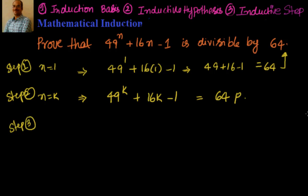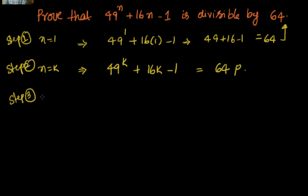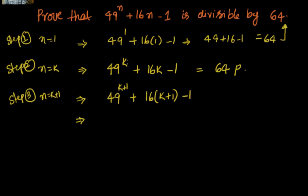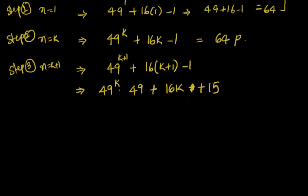This is a crucial step where I have to prove that it's true for n equal to k plus 1. Let's look at how it appears when n equals k plus 1. It will be 49 to the power of k plus 1, plus 16 into k plus 1, minus 1. Let me try to simplify it. This is nothing but 49 to the power of k into 49, plus 16k plus 16 minus 1, which gives plus 15. So this is the n equal to k plus 1 term which I have to prove is divisible by 64.